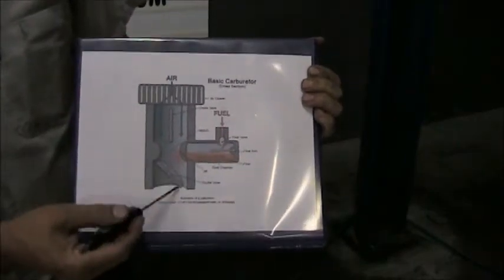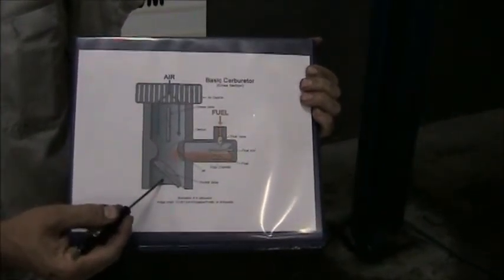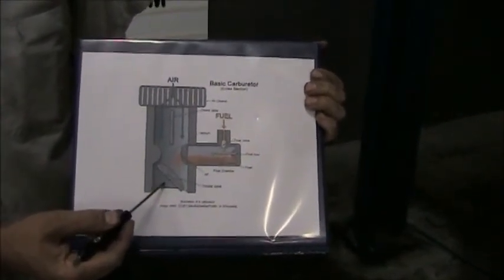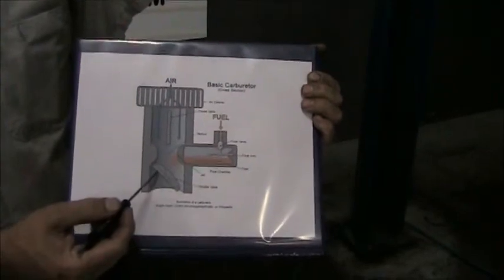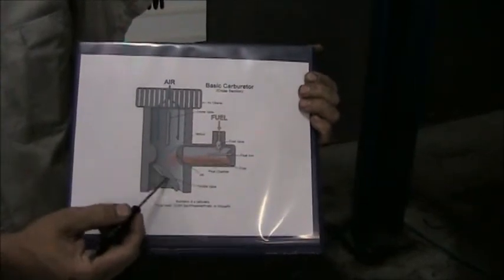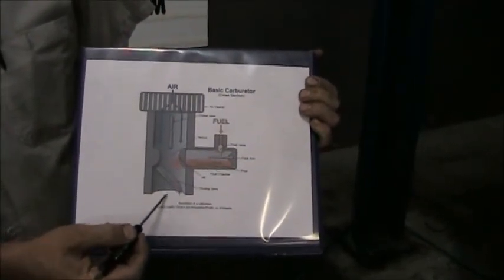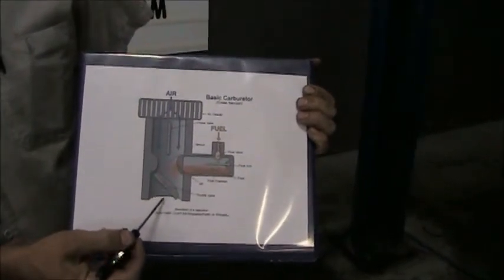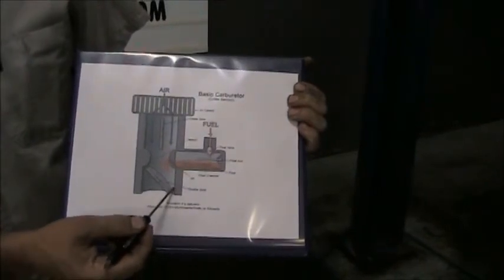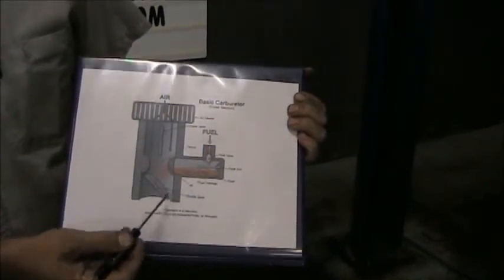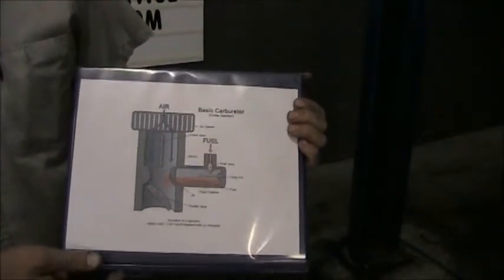Down here we have a throttle valve. This is connected directly to linkage to your foot pedal. As you depress the throttle, this valve goes from the closed position to fully open. When you release, it will close down. This controls the speed of the engine.